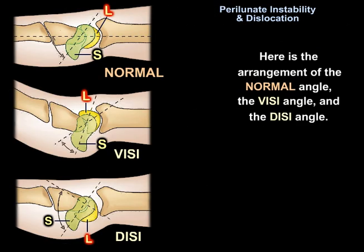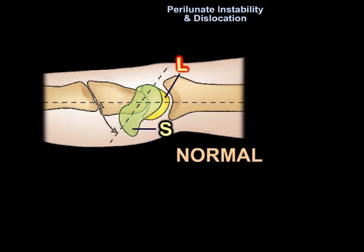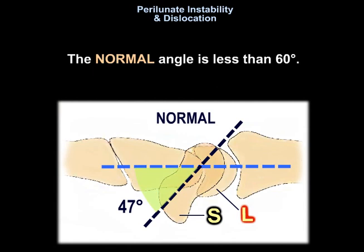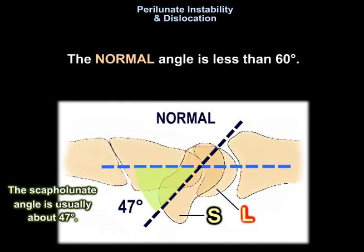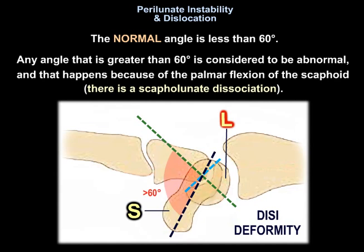Here is the arrangement of the normal angle, the VISI angle, and the DISI angle. The normal scapholunate angle is less than 60 degrees, usually about 47 degrees. Any angle greater than 60 degrees is considered abnormal and occurs because of palmar flexion of the scaphoid, indicating scapholunate dissociation — that is DISI.